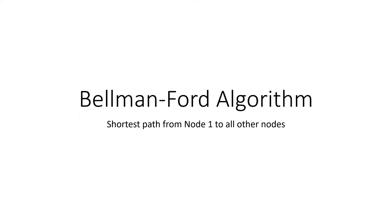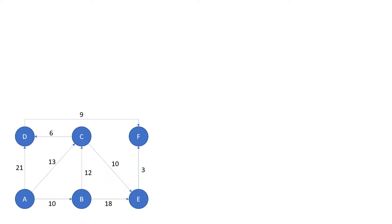Hi everyone, welcome to my video explaining the use of the Bellman-Ford algorithm for finding the shortest path from a starting node to all other nodes. We will start with a sample network diagram with six nodes and directional paths with different weightings.